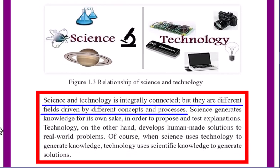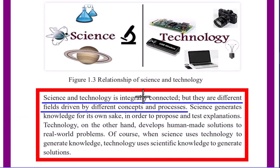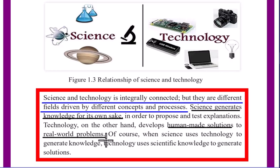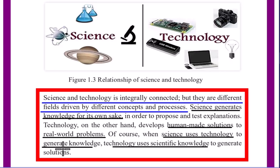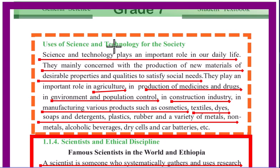Science and technology are integrally connected but they are different fields driven by different concepts and processes. Science generates knowledge for its own sake, in order to propose and test explanations. Technology, on the other hand, develops human-made solutions to real-world problems. When science uses technology to generate knowledge, and technology uses scientific knowledge to develop solutions, the two fields interact.